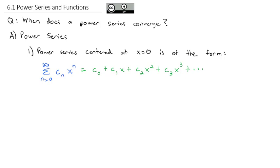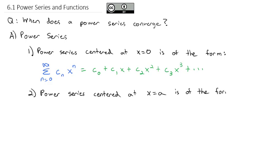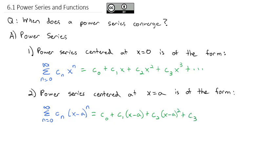This is when the power series is centered at 0. We can shift it and actually do a power series centered at x equals a, some other number, which is of the form: the sum as n goes from 0 to infinity of those same constants, but now instead of x it's x minus a to the n power. Written out: c₀ plus c₁ times (x-a) plus the next constant times (x-a)² plus the next constant times (x-a)³, and so on.